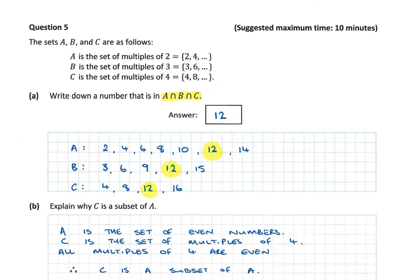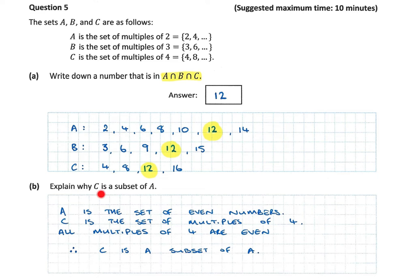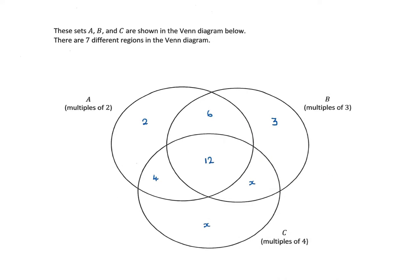That brings us on to Part B. It says: explain why C is a subset of A. You can see that all of the values that occur in C also occur in A. If I had continued, my next term in A would have been 16, because it's a multiple of two. The reason why C is a subset of A is because every term that occurs in C also occurs in A. A is the set of even numbers; C is the set of multiples of four. All multiples of four are even, so C is a subset of A.